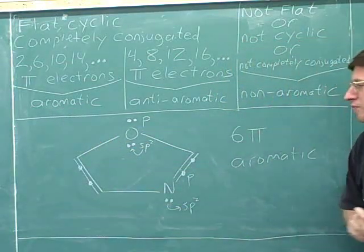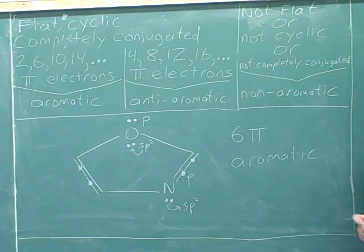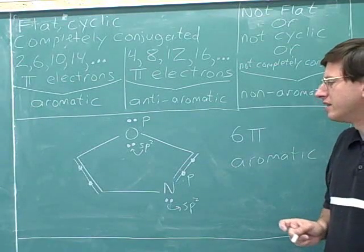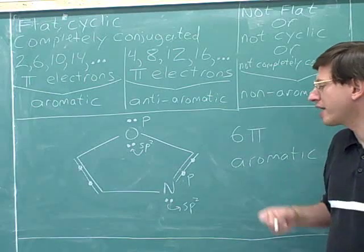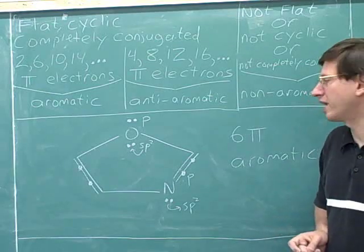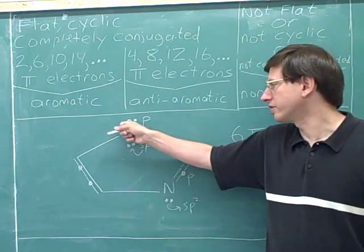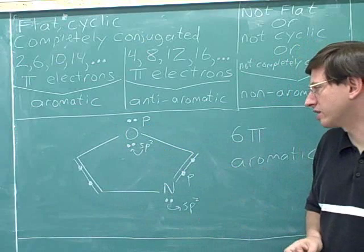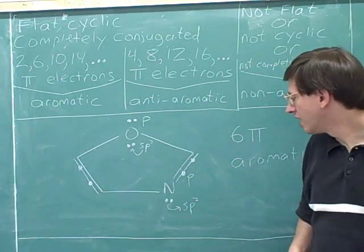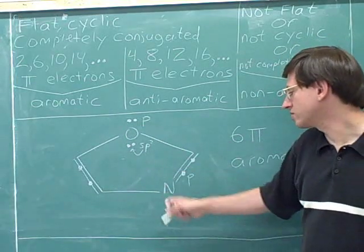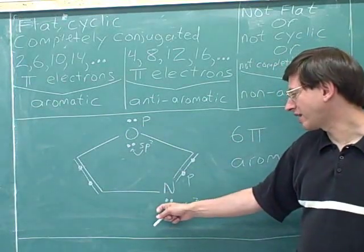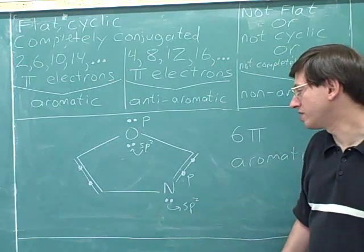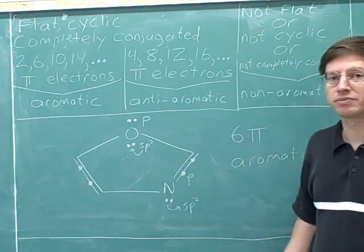This is a good problem to review the skill of remembering that not all lone pairs count as pi electrons. On this oxygen, only one of the lone pairs counts as pi electrons because it only has one p orbital. And for this nitrogen, this lone pair does not count as pi electrons because it's already used its p orbital for the pi bond.